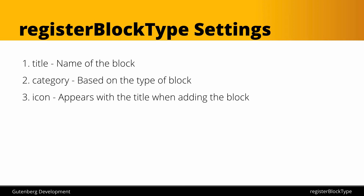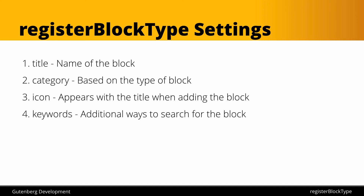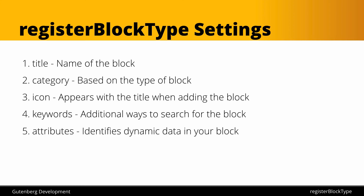Then we have 'icon' — this appears with the title when you're adding a block. We can either choose from a default WordPress dashicon or add our own custom SVG element, and I'll show you how to do that. Next up we have 'keywords' — these are additional ways someone can search for and find your block. By default only the block name is searchable, but you're allowed to enter up to three keywords or phrases that someone could also search to have your block show up.